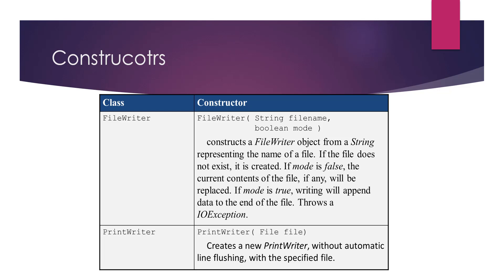If the mode is true, we'll be appending to that file. If the mode is false, we will be replacing the current contents of that file. Once you have your FileWriter object, you will send it to a PrintWriter object, and this PrintWriter will be the one doing the actual writing operation. Our FileWriter will throw a checked exception — the IOException — and we need to surround it with a try-catch block, because Java will not allow us to compile otherwise.